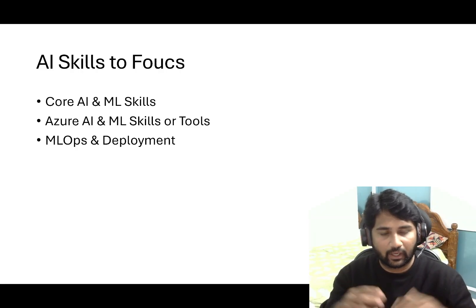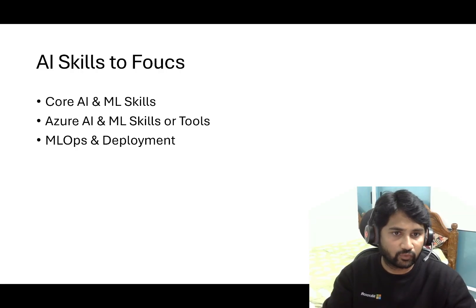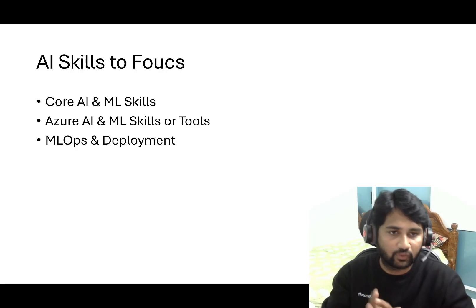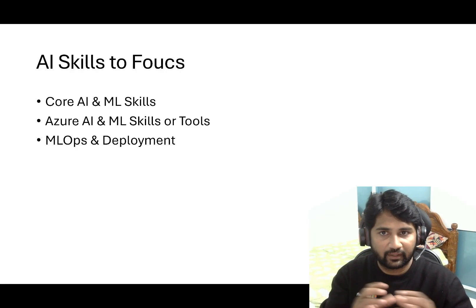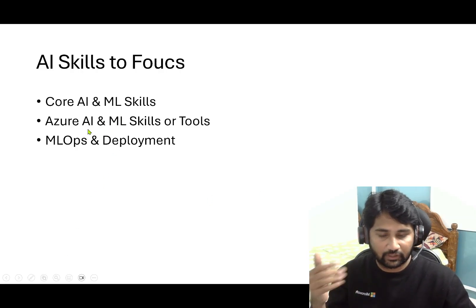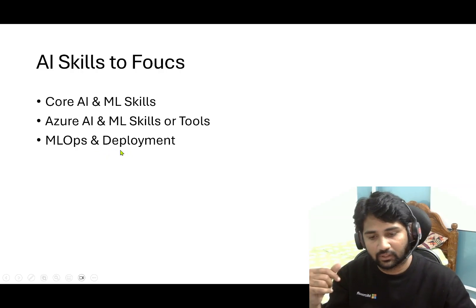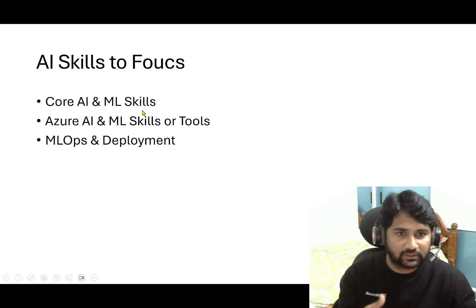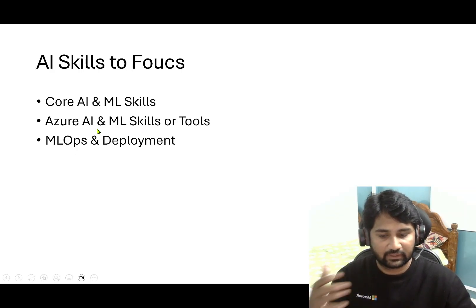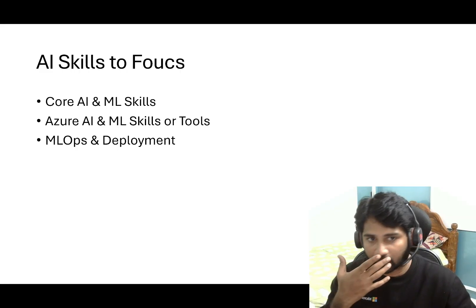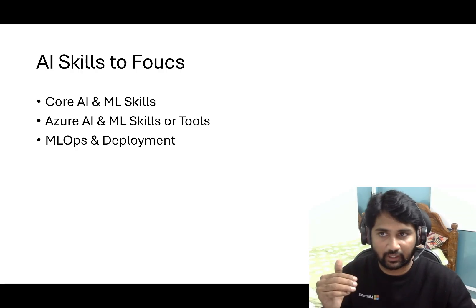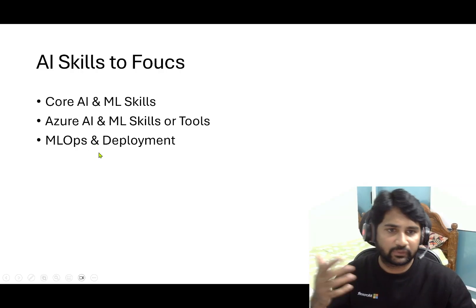I tried to give my point of view on where one can focus when they want to upskill in AI along with their current role, especially when you are in an Azure Data Engineering role. I divided these focus areas into three categories: core AI and ML skills, Azure-related AI and ML skills, and ML operations and deployments. Core AI and ML skills means skills that purely talk about machine learning and AI irrespective of any cloud or technology.